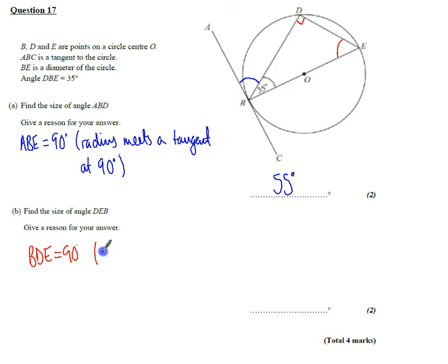And the reason for that is because angle in a semicircle is 90 degrees. So because this is a diameter, we've got a triangle, we know it's a right angle triangle up here.